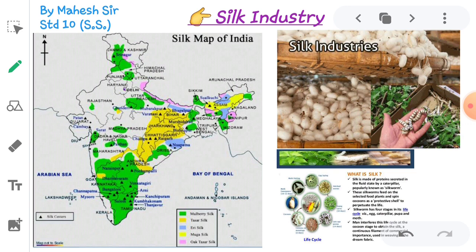Silken clothes are exported to Europe, Africa, Gulf countries. Besides these, silk is also exported to Germany, Singapore, USA, Kuwait, Malaysia and Russia. In the international market, India's silk is facing tough competition from China. China is the motherland of silk.